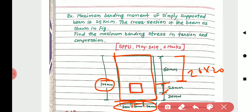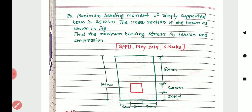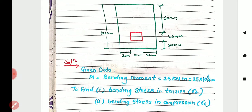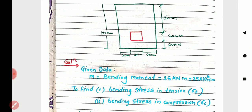The simply supported beam is given with a square hollow part of 20 by 20 mm, and a maximum bending moment of 25 kNm is directly given. Try to solve this example — first note down the given data.